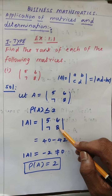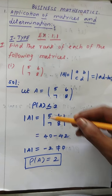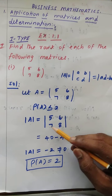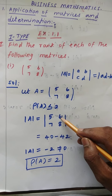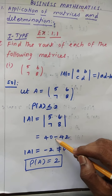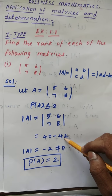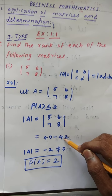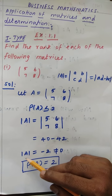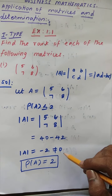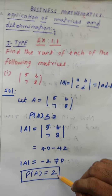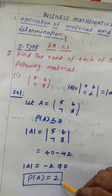So for the matrix [5, 6; 7, 8]: 5 times 8 is 40, and 7 times 6 is 42. Plus into plus is plus; opposite means minus. So 40 minus 42 equals minus 2. Determinant A equals minus 2, which is not equal to 0. So rank of A equals 2.